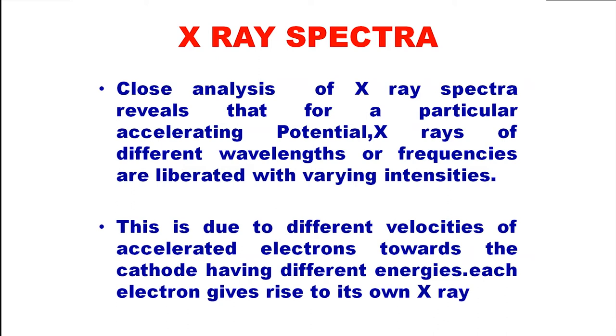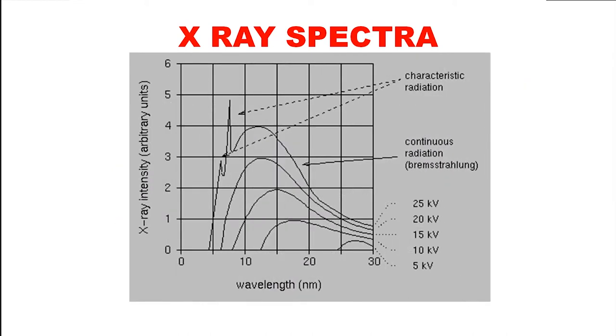Close analysis of x-ray spectra reveals that for a particular accelerating potential, x-rays of different wavelengths or frequencies are liberated with varying intensities. This is due to the different velocities of accelerated electrons towards the cathode having different energies. Each electron gives rise to its own x-ray.